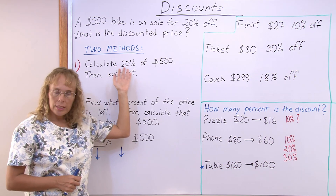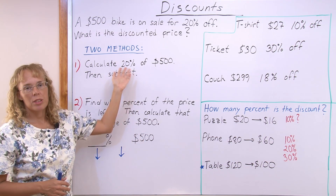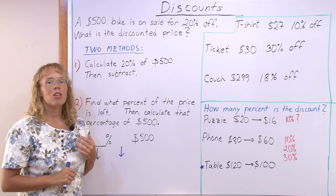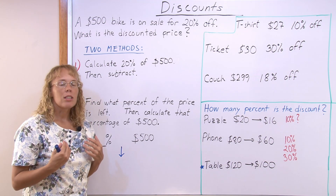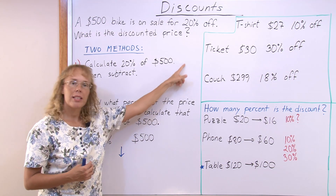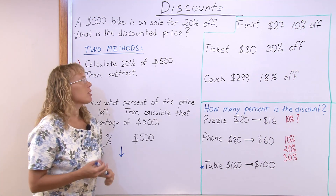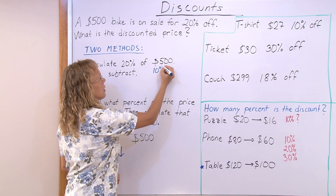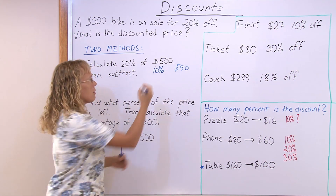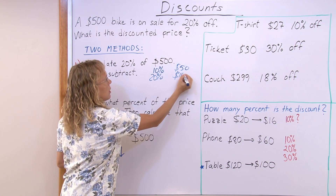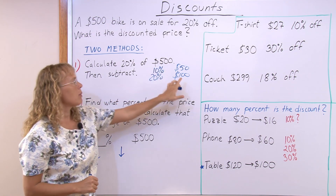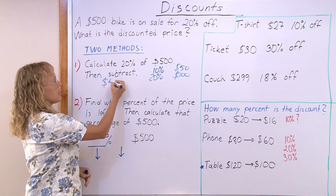When it is a simple number like 20%, I like to use mental math. Always remember the 10% — it is so easy to calculate 10% of any quantity. 10% of 500 is just the 10th part of it: you divide by 10 and get $50. So 20% is double that, or $100. That is how much we take off the price, so $500 minus $100 gives the final discounted price: $400.